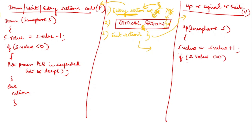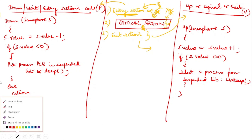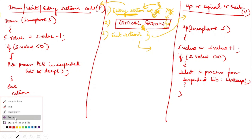In the up() function, if s.value is less than or equal to 0, a process is selected from the suspended list and woken up. These are the implementations of both the down (wait) and up (signal) system calls. With an example, I'll show how synchronization is achieved using these two calls.